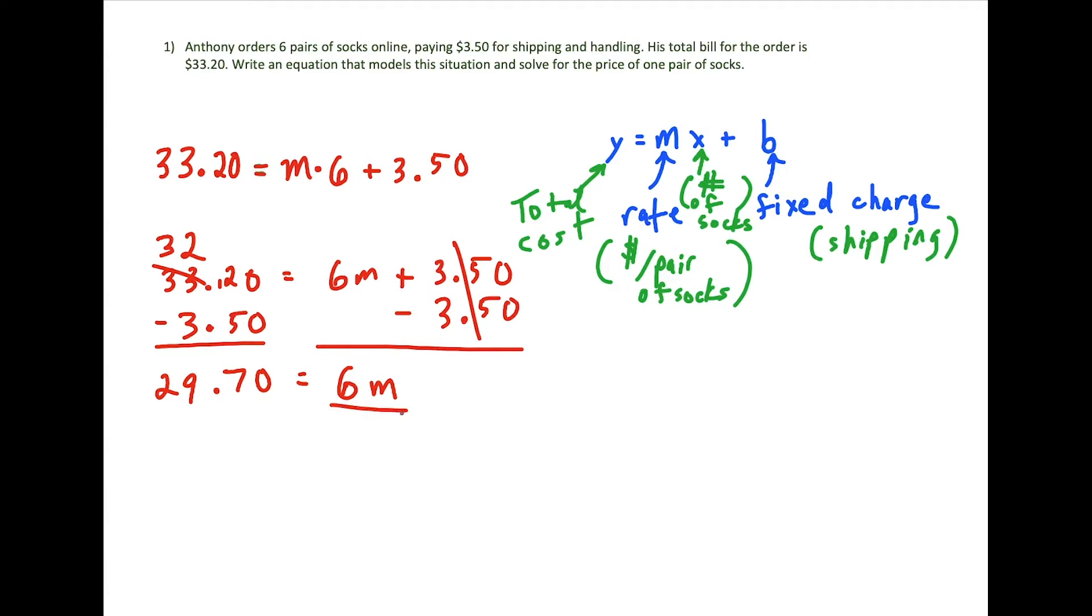And divide both sides by 6. We could use a calculator, but this isn't so bad. We have 6 goes into 29 four times, and there's a remainder of 5. So we throw our decimal in. 6 goes into 57 nine times with a remainder of 3 because 54 is as close as we get, and 54 is three units away from 57. And then 6 goes into 30 five times.